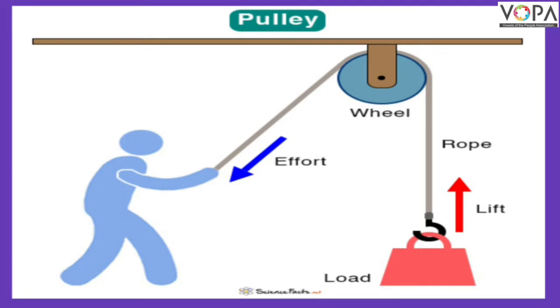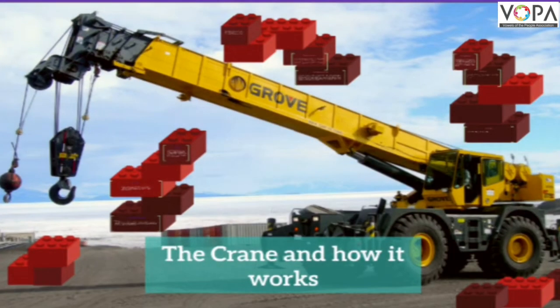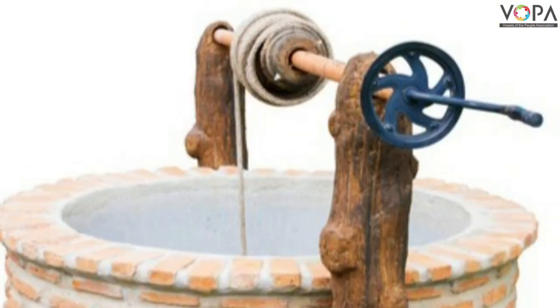The use of pulley: it is used in a crane to lift a heavy machine, and it is also used in a deep well to draw water with the help of a bucket.